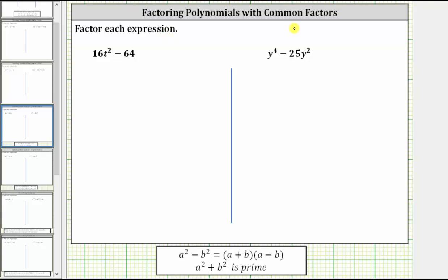We were asked to factor each expression completely. The first expression is 16t squared minus 64.